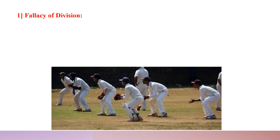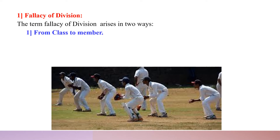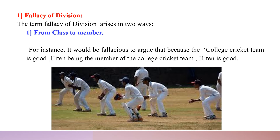The fallacy of division arises in two ways. The first way is from class to member. For example, it would be fallacious to argue that the college cricket team is good, and Heathen being a member of the college cricket team, therefore Heathen is good. The whole class being good in cricket does not mean that Heathen, who is a member of that class, is also good. This is the fallacy of division from class to member.